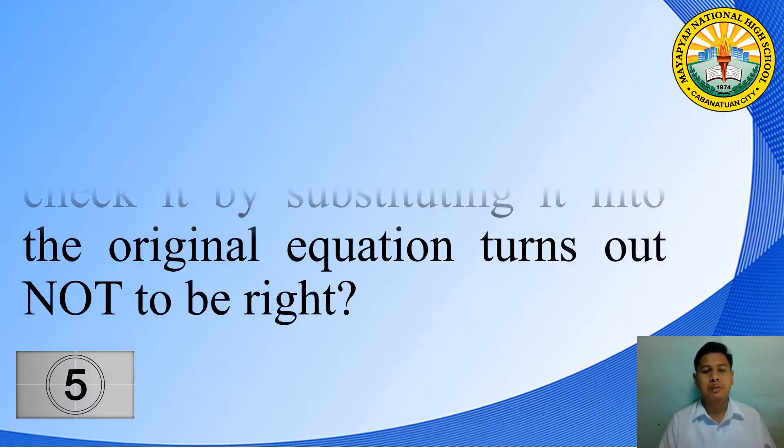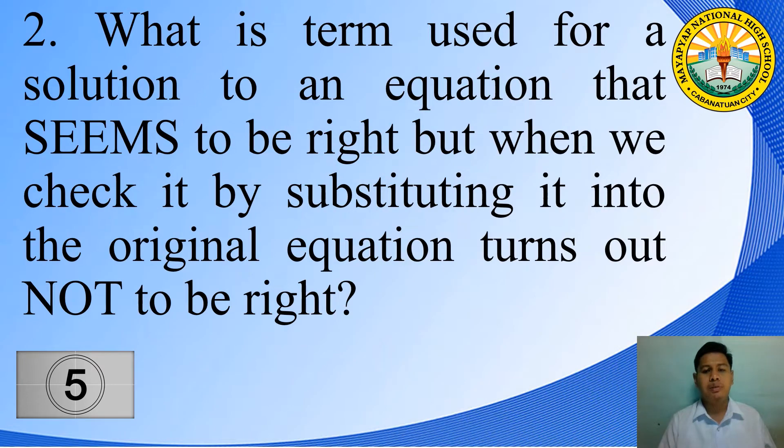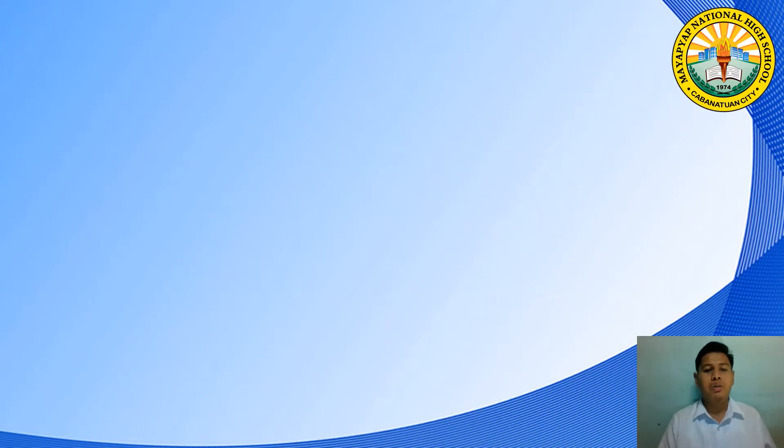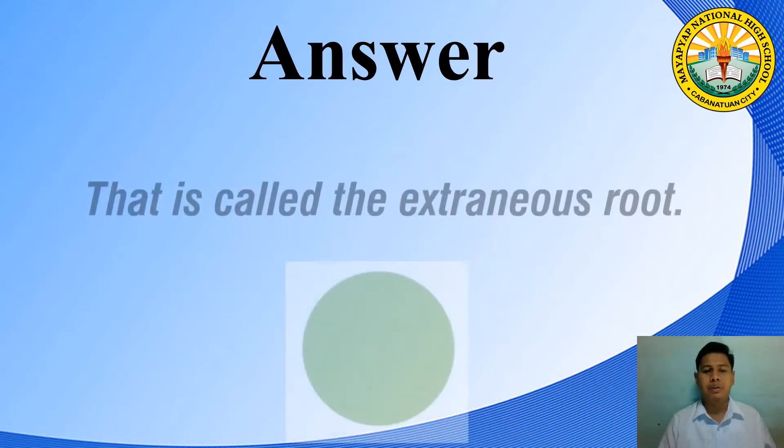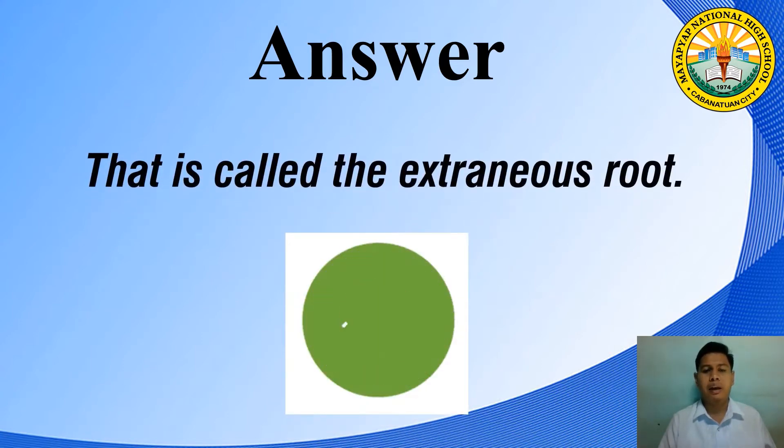The next question is, what is the term used for a solution to an equation that seems to be right but when we check it by substituting it into the original equation turns out not to be right. Timer starts now. Times up! What do you think is the answer? Very good! That is called the extraneous root.